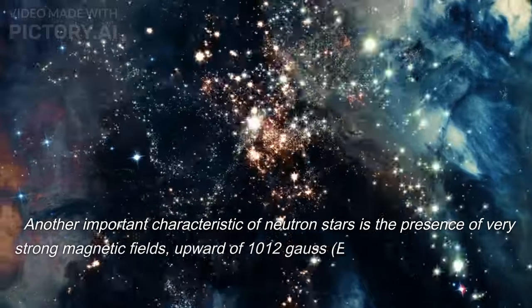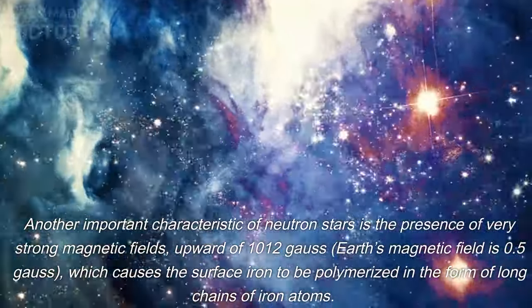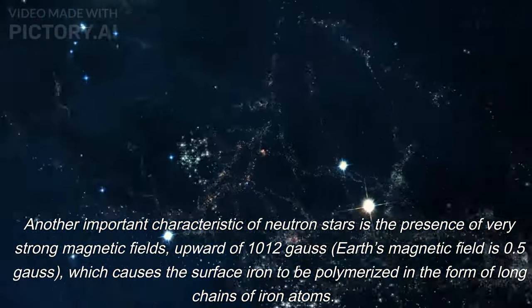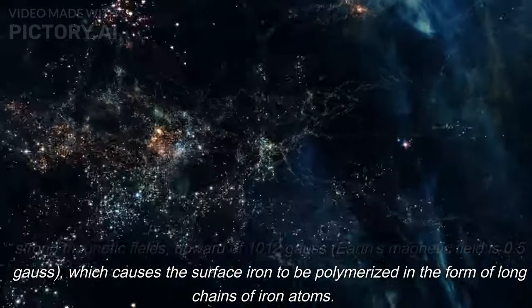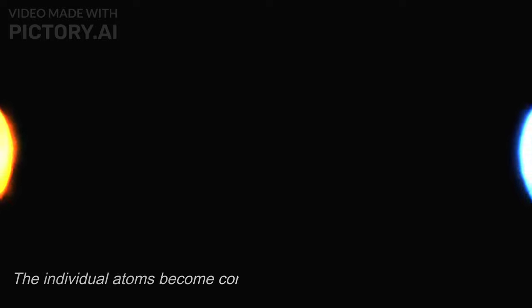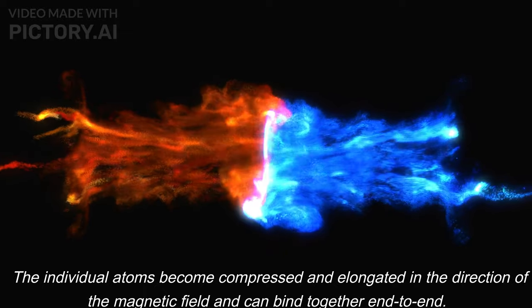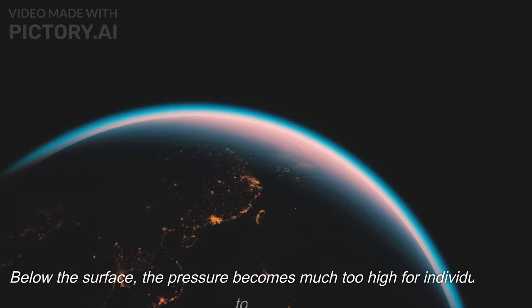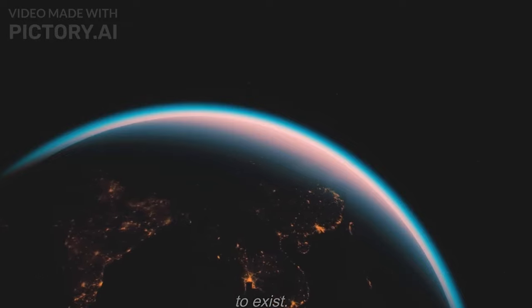Another important characteristic of neutron stars is the presence of very strong magnetic fields, upward of 10^12 Gauss. Earth's magnetic field is 0.5 Gauss, which causes the surface iron to be polymerized in the form of long chains of iron atoms. The individual atoms become compressed and elongated in the direction of the magnetic field and can bind together end-to-end. Below the surface, the pressure becomes much too high for individual atoms to exist.